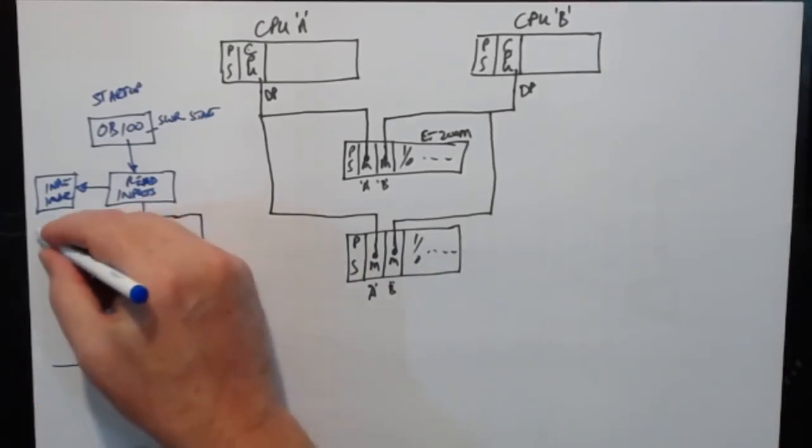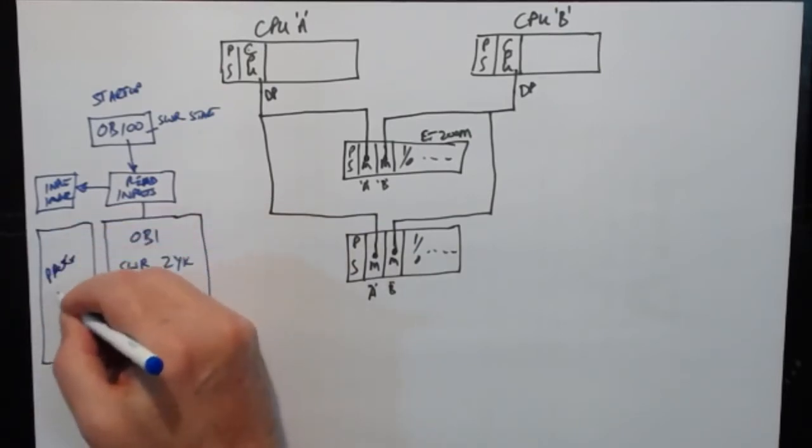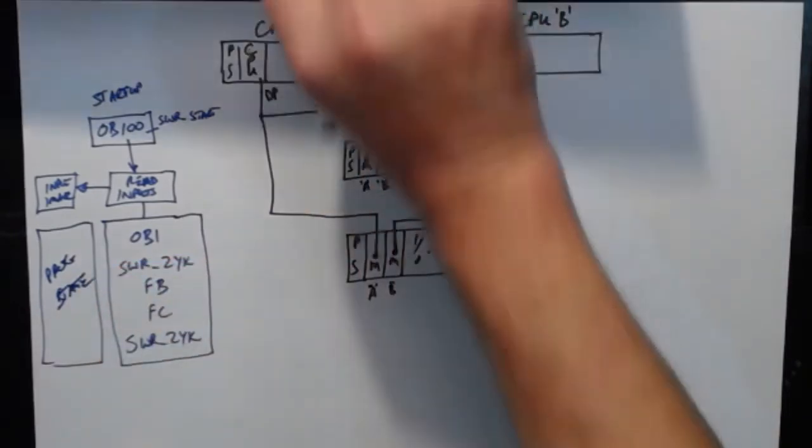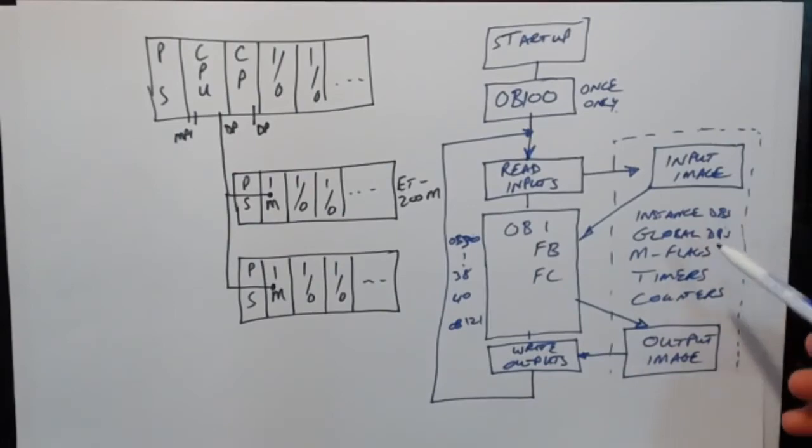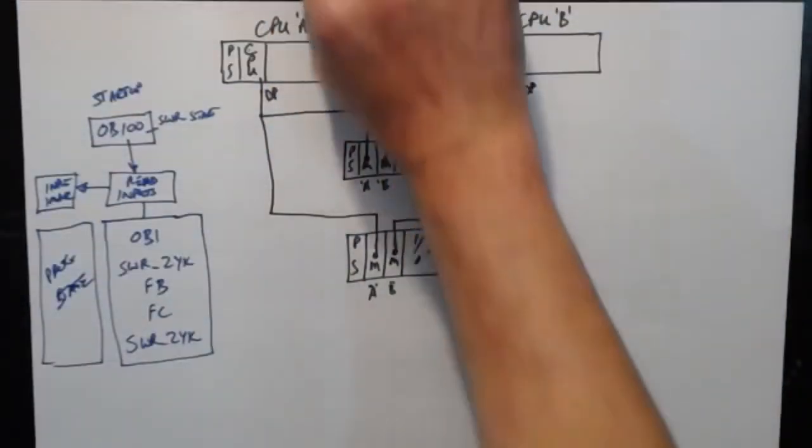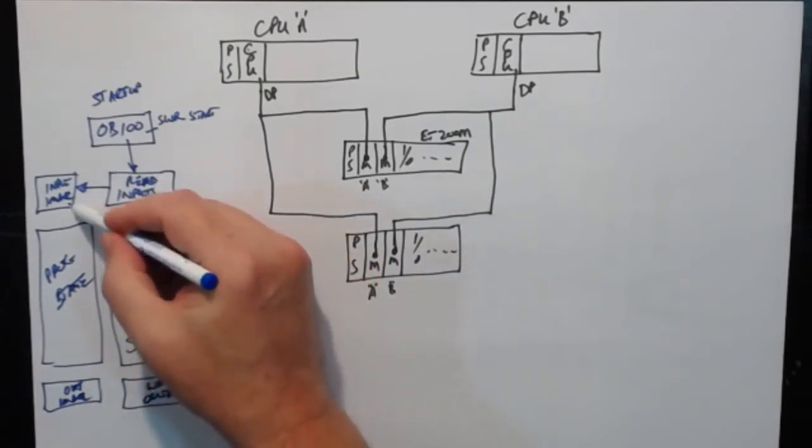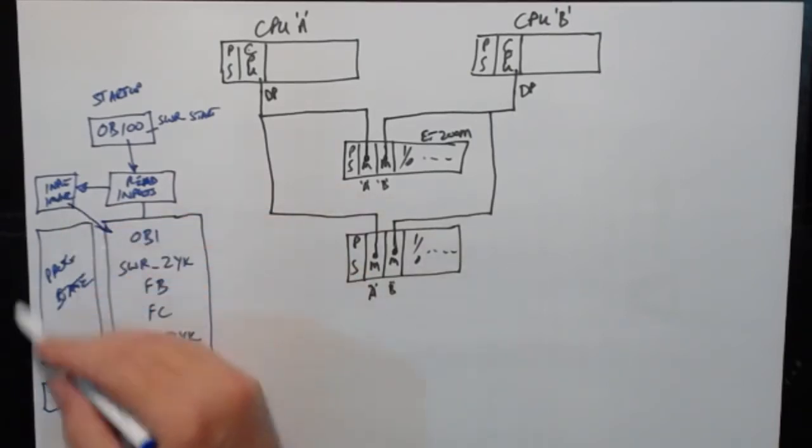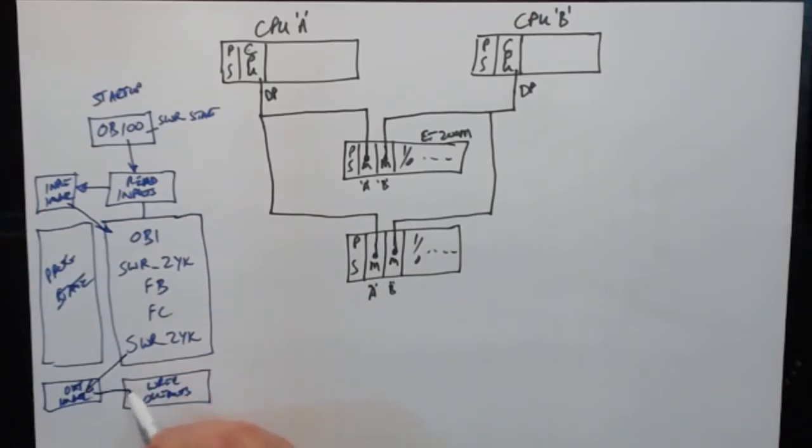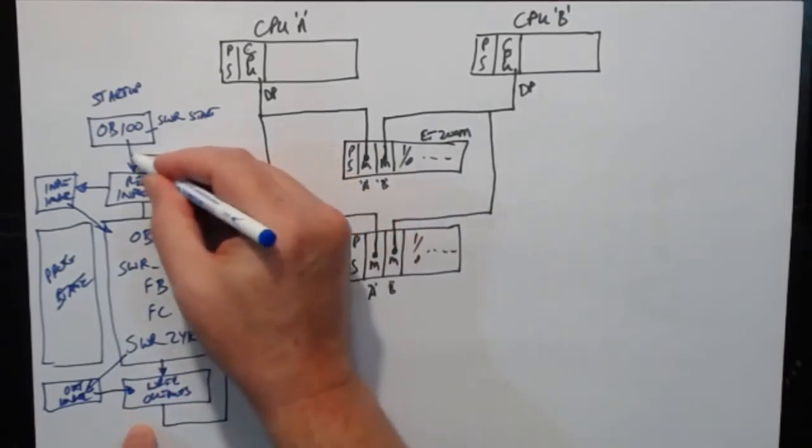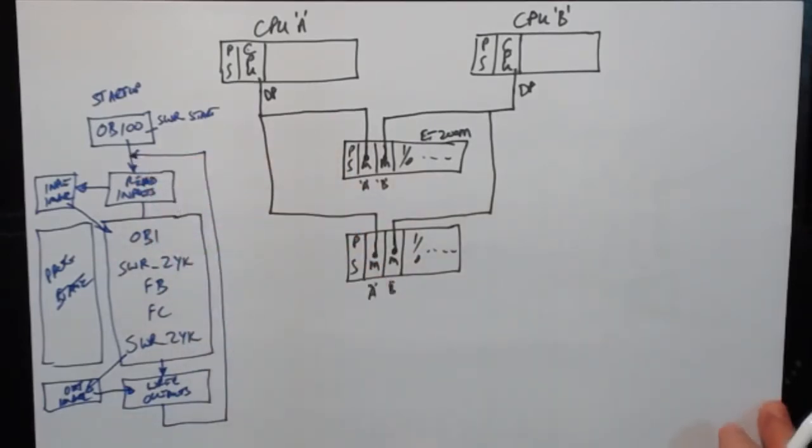That's OB1. And OB1 then operates on program state, just like what we saw on the other PLC. The program state is all your instance DBs, global DBs, semaphore flags and so on. Then we have an output image and write the outputs. So we read from inputs, the program reads from the input image, does all the work with program state, writes to the output image. At the end of the OB1, we write to the outputs and then back to here again. So that's exactly the same as what we saw on the other PLC.